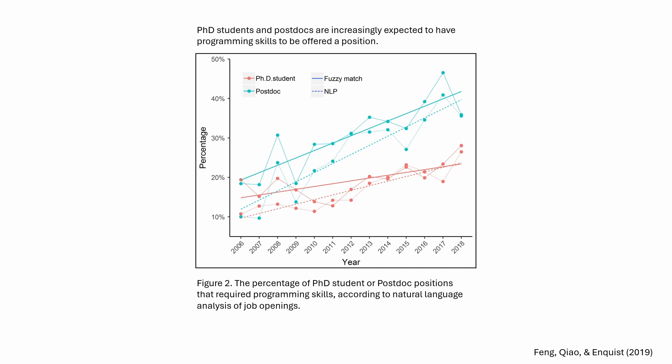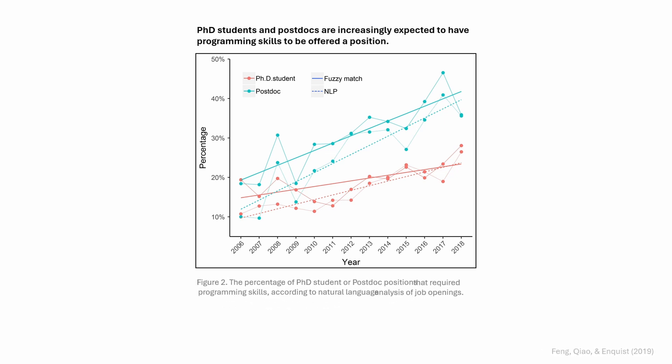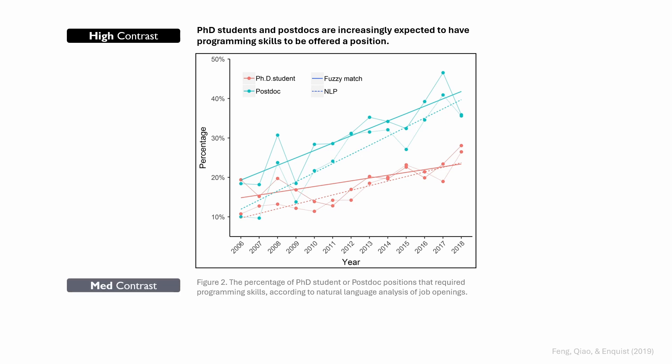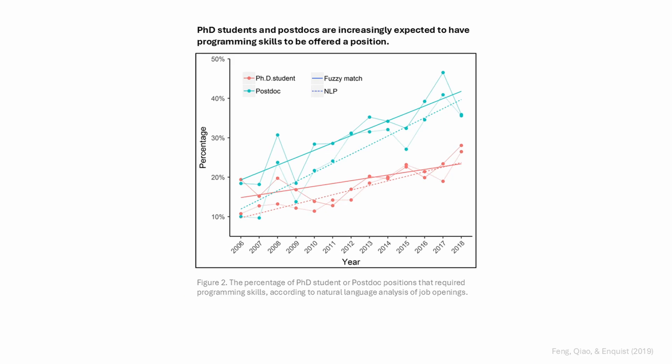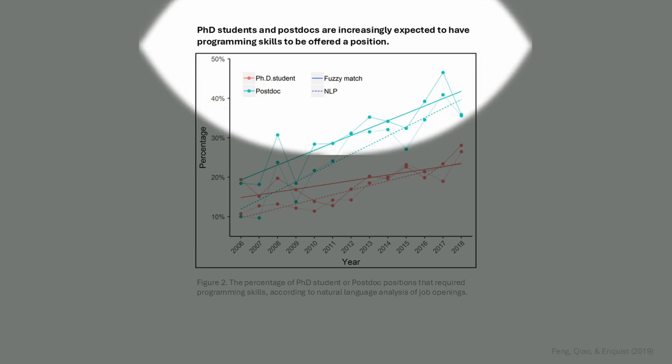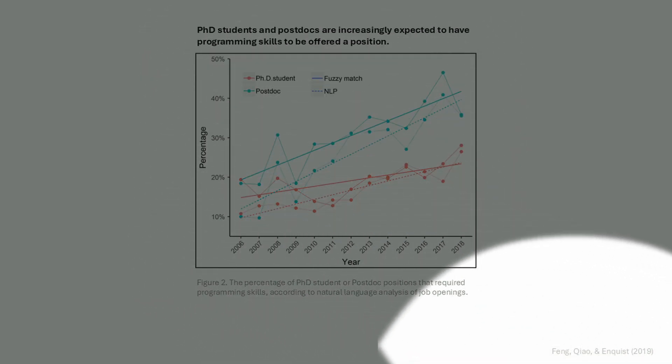But we can change this: make the takeaway very high contrast, the caption medium contrast, and the citation very low contrast — almost so low as to be inaccessible, but that information really isn't important, so just push it way back. Now people are more likely to read the text in the right order, from most important to least important.